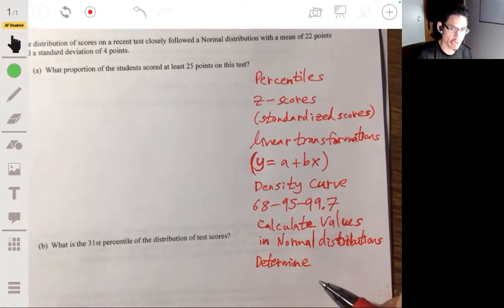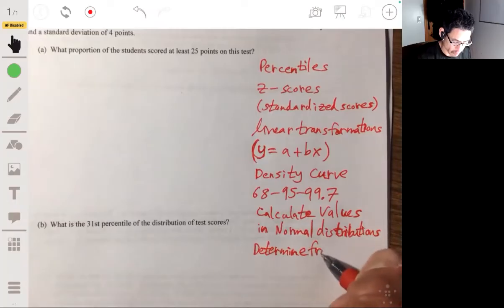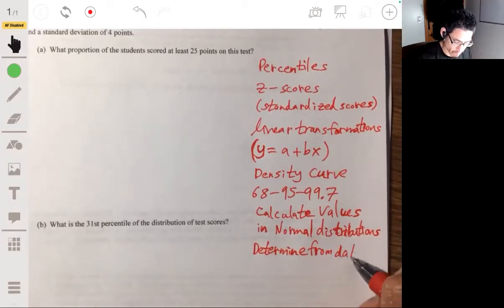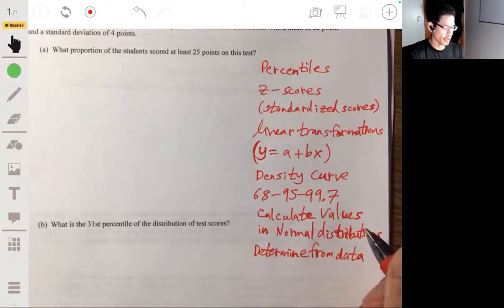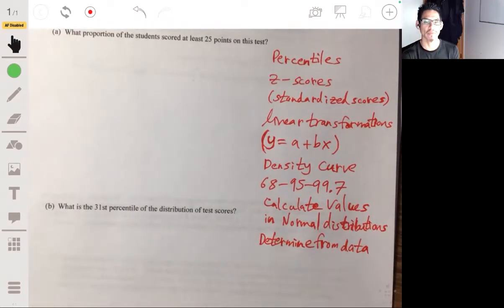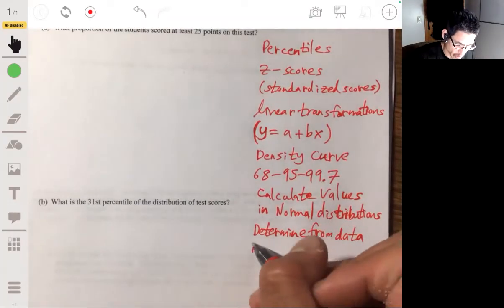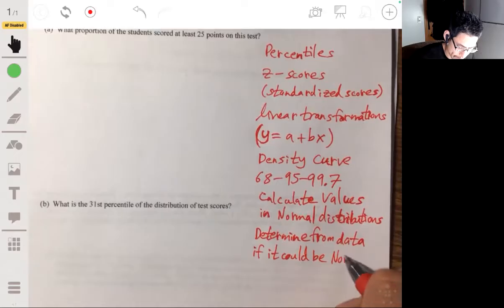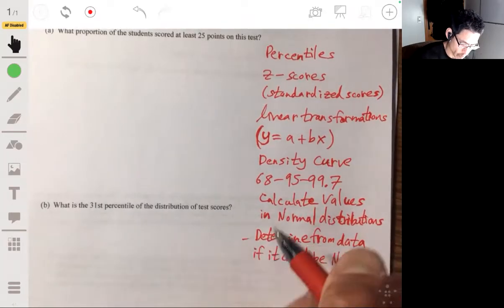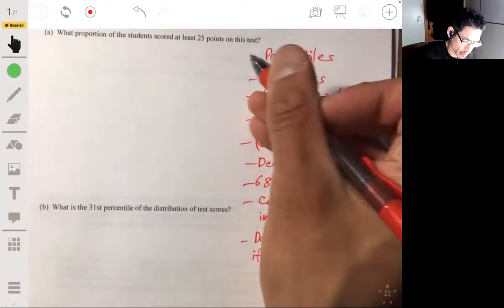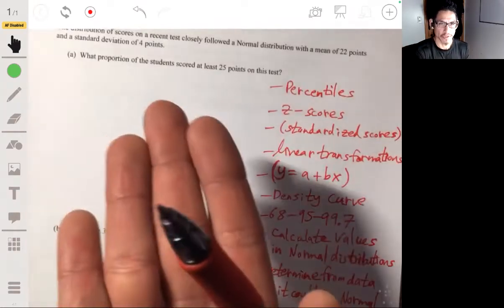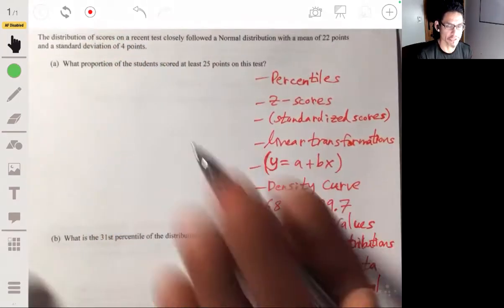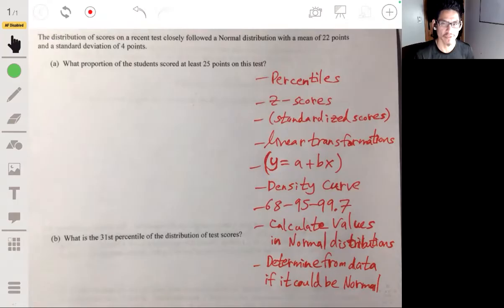And also know how to determine from a graph or data if whatever we're talking about, if the data could be a normal distribution. Now, I'm gonna go through these in this example which is why I have this problem here, because I love going through example problems to explain concepts.